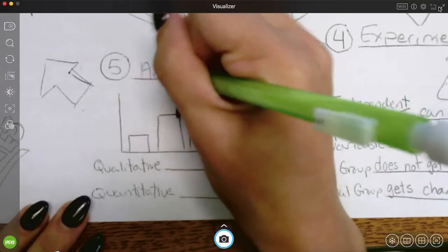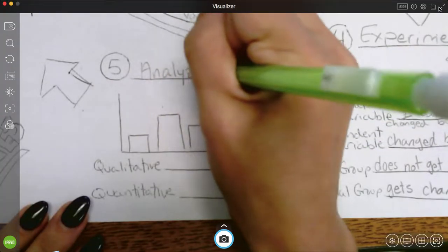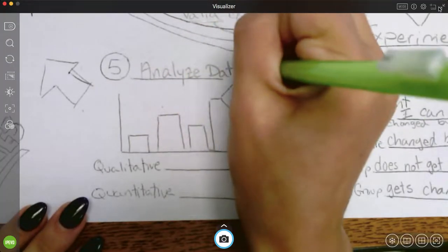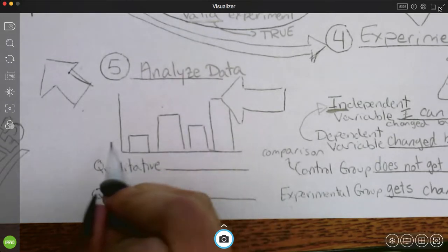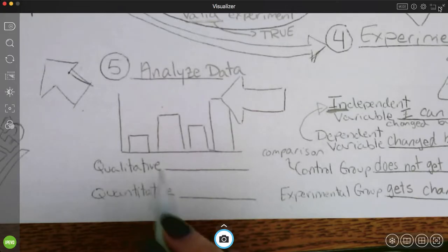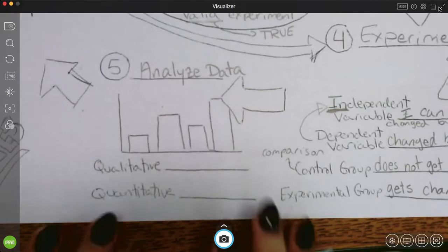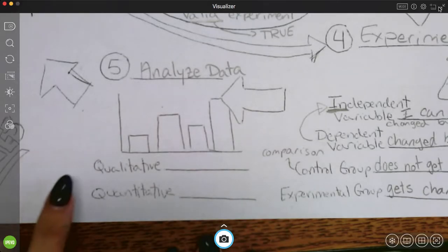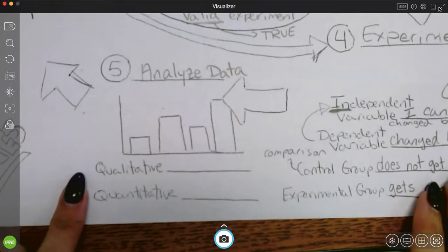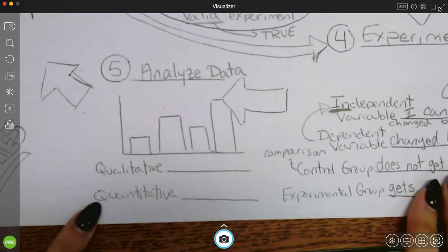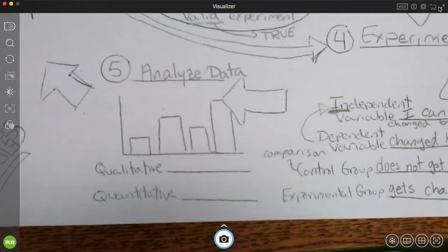Number five, which is analyze data. So analyze data. This picture, hopefully you recognize it as a graph. We're going to do a bunch of stuff on graphs tomorrow. But when I analyze, I can have two types of data. I can have qualitative or quantitative.